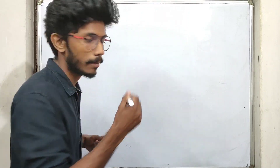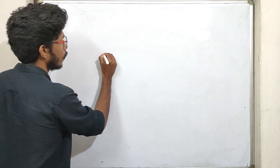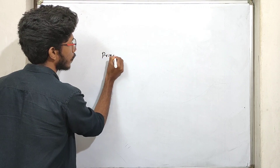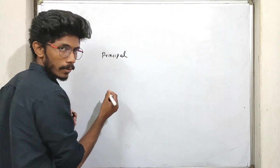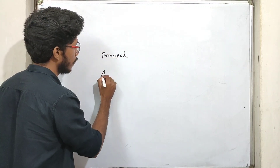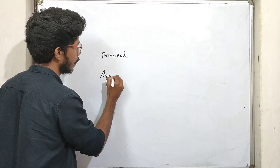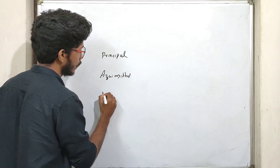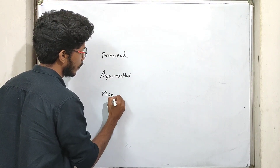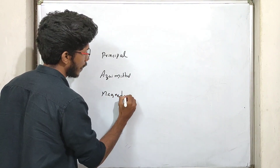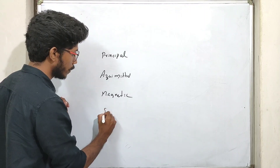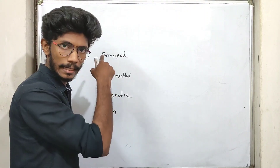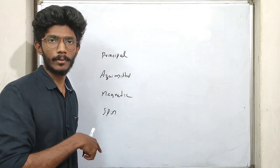Why do we have these categories? We are using 4 quantum numbers. The first one is the principal quantum number, the second one is the azimuthal quantum number, the third one is the magnetic quantum number, and the fourth one is the spin quantum number.